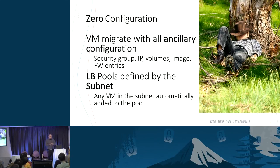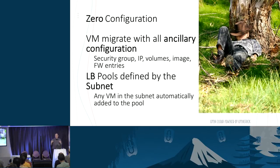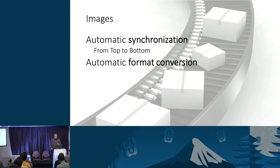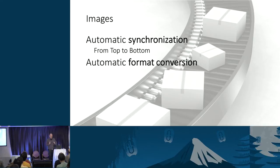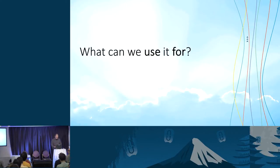Load balancing pools: you can define load balancing by subnet, meaning you create a subnet and every machine that acquires an address in that subnet, no matter which cloud it resides on, automatically becomes part of the load balancing pool without manual configuration. Images: you want images automatically synchronized when moving a VM from one cloud to another, with the right image in the right version and automatic format conversion.